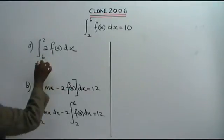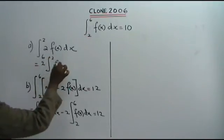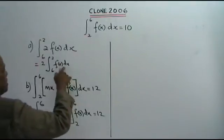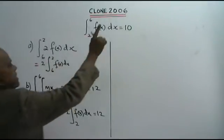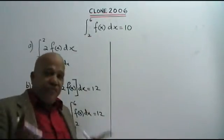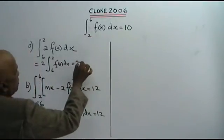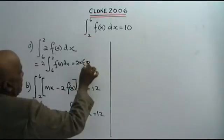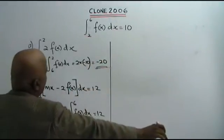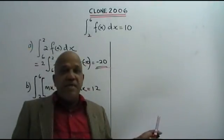Now you bring the 2 in front: 2 times the integral between 2 and 6 of f(x) dx. The integral of f(x) dx between 6 and 2 is 10, so between 2 and 6 it is negative 10. Therefore, 2 times negative 10 equals negative 20. That is your answer for part A.